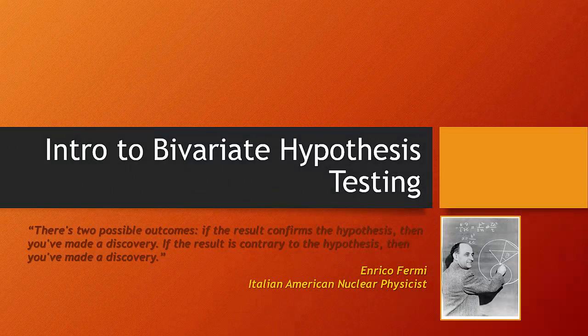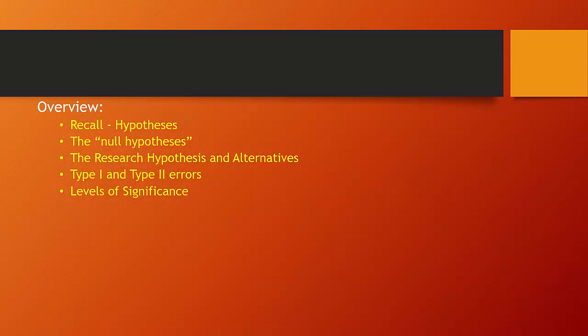Hello and welcome back. Now that we have an understanding of cross-tabulation, I want to spend some time thinking about the basics of hypothesis testing. We're going to remember some of the basics of hypotheses and introduce the idea of the null hypothesis. We'll look at the research hypothesis and consider alternatives to it. Critical to understanding hypothesis testing, we need to understand type 1 and type 2 errors, and finally, levels of significance.